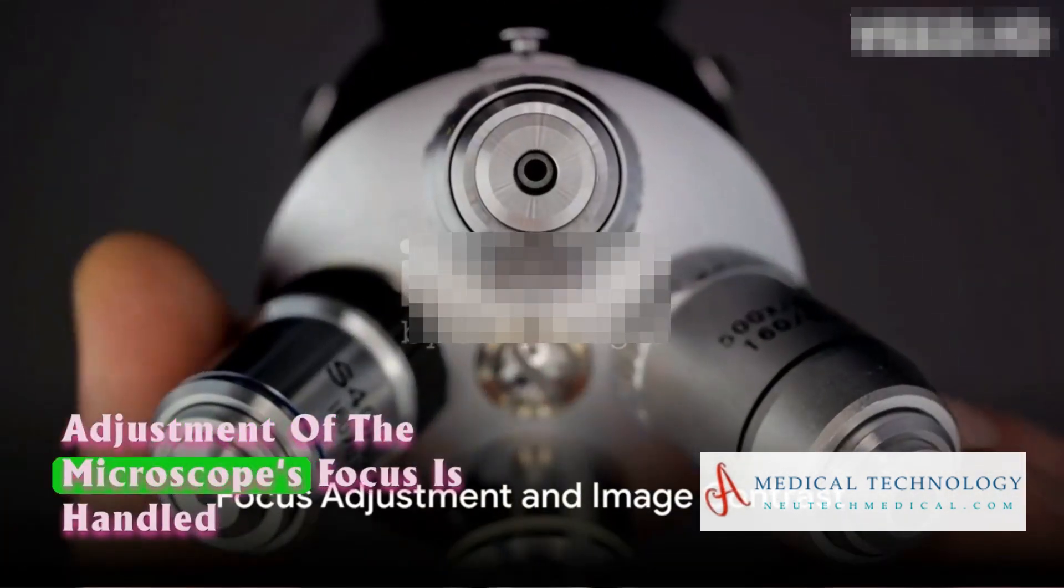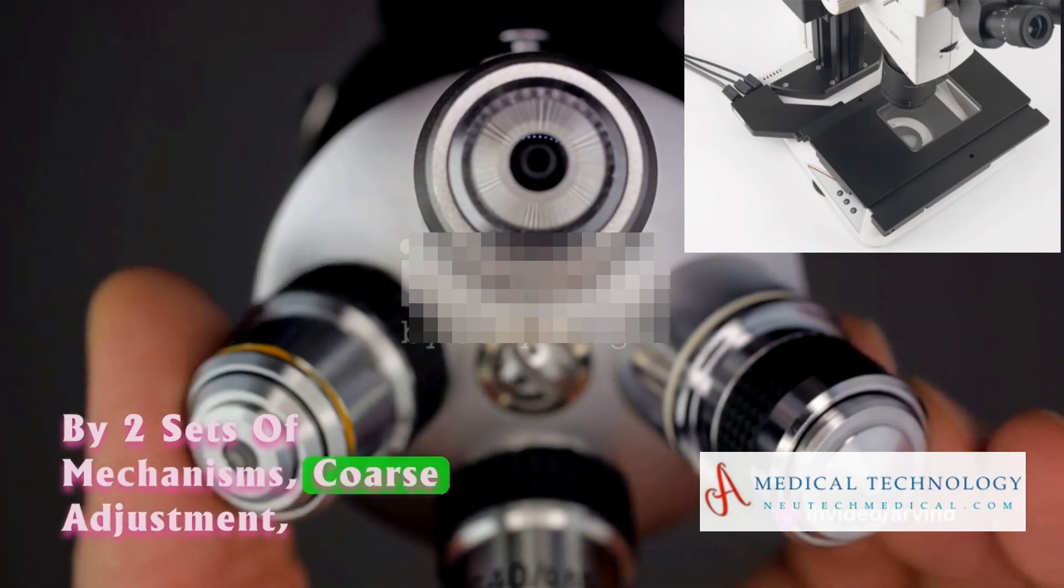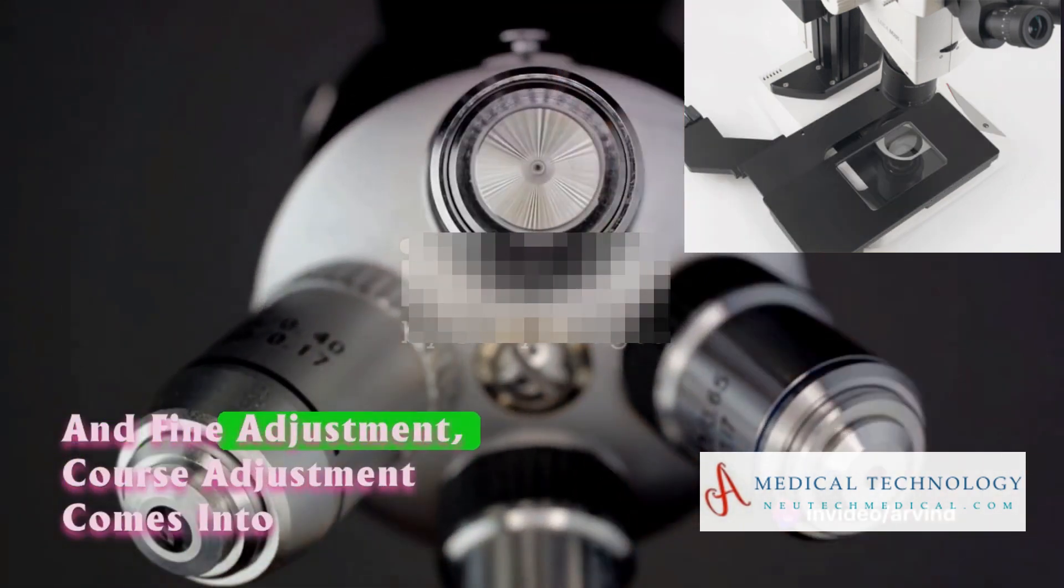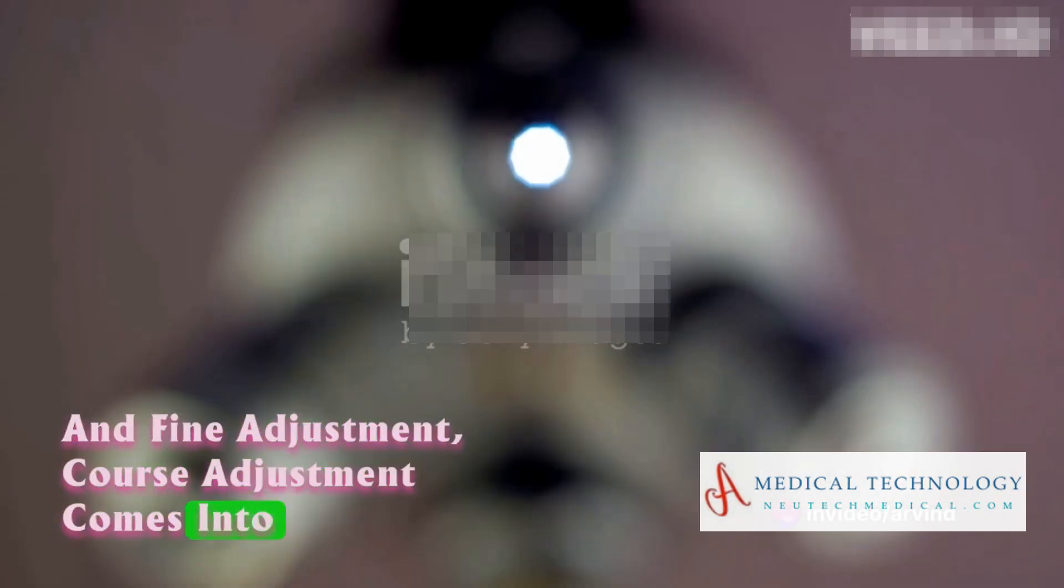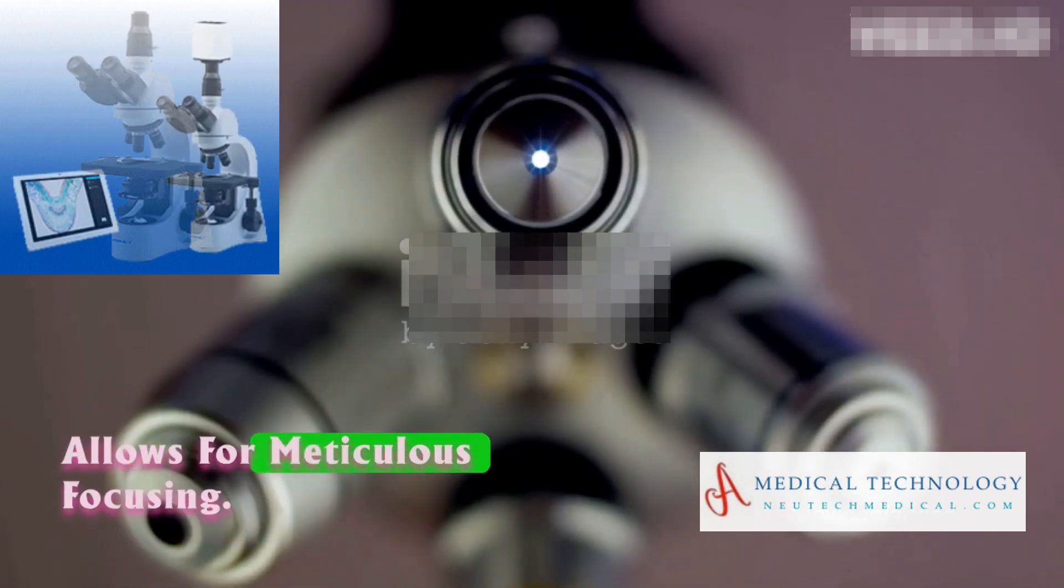Adjustment of the microscope's focus is handled by two sets of mechanisms: coarse adjustment and fine adjustment. Coarse adjustment comes into play for initial focusing, while fine adjustment allows for meticulous focusing.